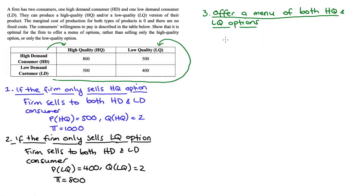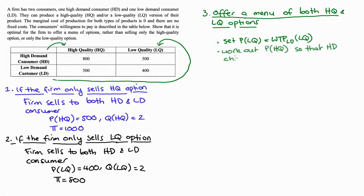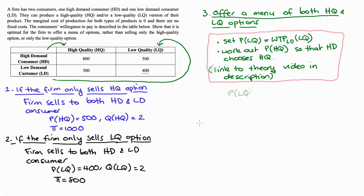We need to get the prices right. First, we price the low quality package equal to the low demand consumer's willingness to pay for that package. I have another video on the theory behind this — I'll link it below for a more thorough treatment. The willingness to pay of the low demand consumer for the low quality package is $400, so that will be the price of the low quality package in our menu.